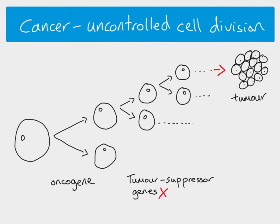Another thing that doesn't work properly in cancer is contact inhibition. Normally, when a cell as it's dividing comes into contact with other cells, that triggers it to stop division. But when you have a cancer and a tumor has formed, that contact inhibition process doesn't happen, so the tumor can just get bigger and bigger as more and more cells divide and add on to the tumor.